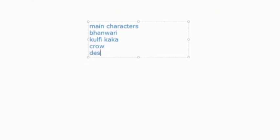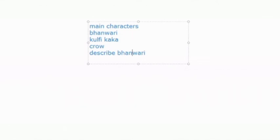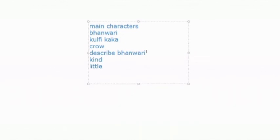The next question: describe Bhavri. Give a few describing words for the main character. How was she? She was a kind girl, very caring, very loving, and a small girl. We can say she was kind, she was little, and she was wise. Yes — she added all the numbers and made calculations on her fingers, which showed that she was quite intelligent and wise.